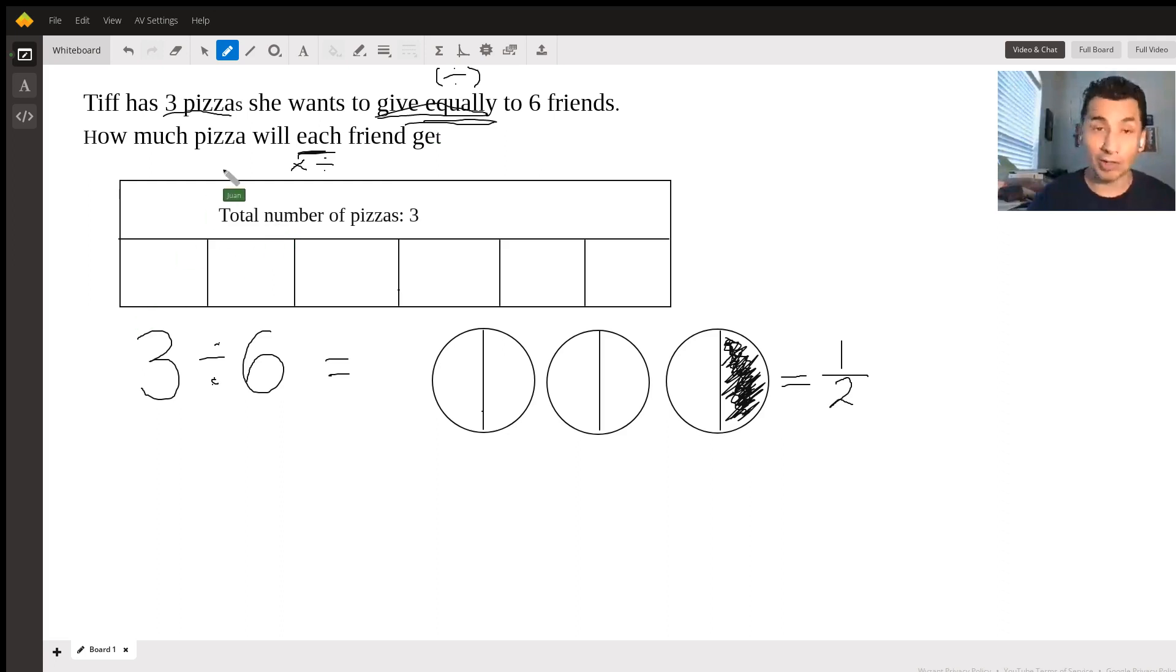I said we are going to solve this problem using a strip diagram. A strip diagram is just a rectangle that goes on the top, and usually we put on the top the total number. In this case, the total number of pizzas.